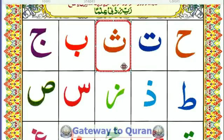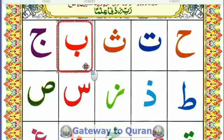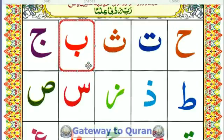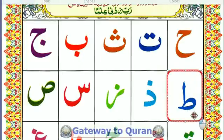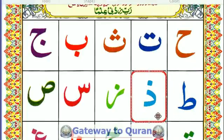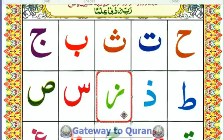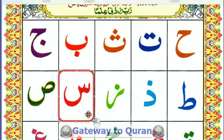What is this letter? Ta. What is this letter? Fa. What is this one? Ba. What is this one? Jim. What is this one? Ta.